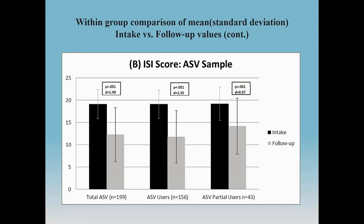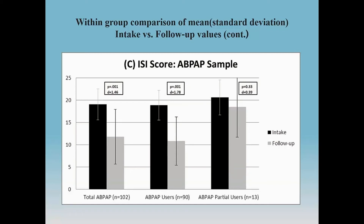These are statistically significant between groups, but again, this is a retrospective, non-randomized controlled study. The auto-bi-level device again shows the same changes — not quite as much with auto-bi-level in the partial user group, but that sample is very small so it may not be as relevant.